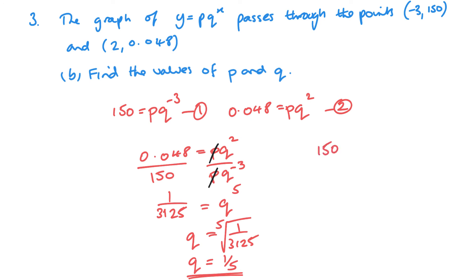Now I'm going to pop that in equation 1, so I've got p times 1/5 to the minus 3. 1/5 to the minus 3 is 5 to the power 3, or 125p. So p is 150 over 125, which is 6/5. If you want the answers in decimals, we've got 0.2 and 1.2.